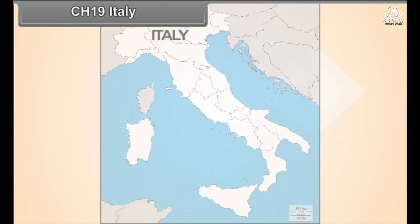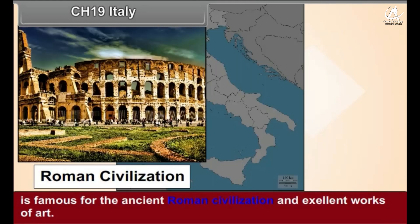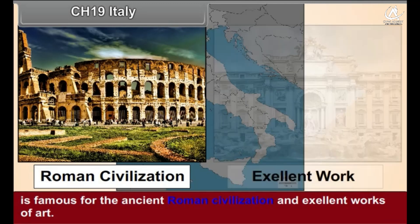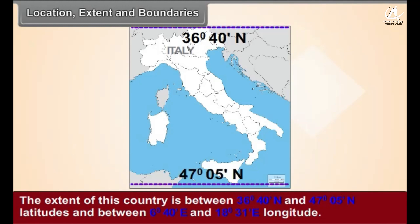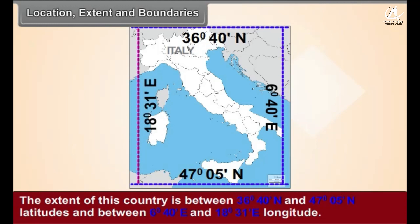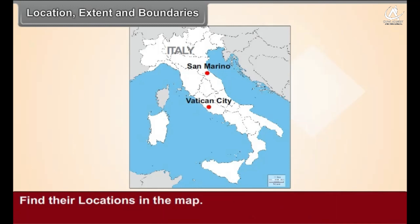Chapter 19: Italy. Italy is a country from the continent of Europe, famous for the ancient Roman civilization and excellent works of art. The country lies between 36°40'N and 47°5'N latitudes, and between 6°40'E and 18°31'E longitudes. Within these geographical limits, two independent countries are located: San Marino and Vatican City. Find their locations on the map.